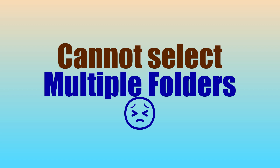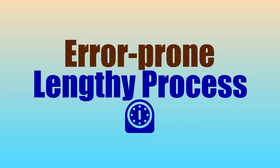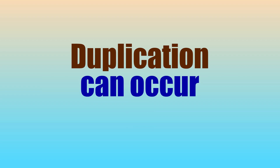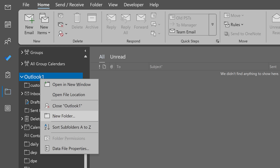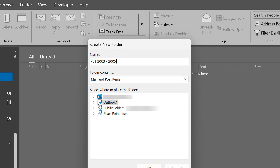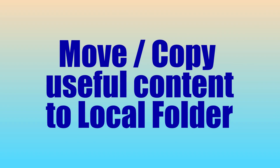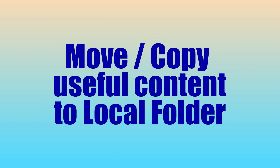The problem is we cannot multi-select folders — we have to do it one by one, and that's going to be a laborious process. Second, there are going to be a lot of items to copy, that's going to take time and it may fail. If it fails, you have to copy again, and if you do that, duplication will occur. So let's handle these problems up front. What I'm going to do is go to the PST and create a folder — give this folder a sensible name. This folder I'm going to copy to the main mailbox. The next step is to move all the data into this folder.